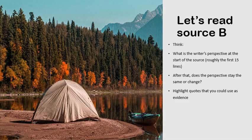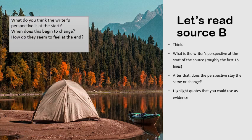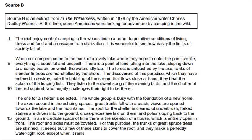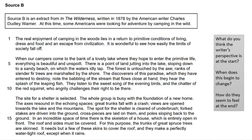Now I'm going to read Source B. Exactly the same — think about what the writer's perspective is at the start of the source, roughly the first 15 lines, and then after that does their perspective stay the same or change? Highlight any quotes you could use as evidence, and don't forget you're focusing on their attitude or perspective on camping. This is an extract from In the Wilderness, written in 1878 by the American writer Charles Dudley Warner. At this time some Americans were looking for adventure by camping in the wild. You can either pause the video to read the extract yourself, or listen along — either way, think about the writer's perspectives at the start, whether they begin to change, and how they feel at the end.